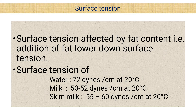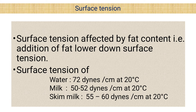Surface tension is affected by fat content — the addition of fat lowers the surface tension. Surface tension of water is 72 dynes per centimeter at 20°C, milk is 50 to 52 dynes per centimeter at 20°C, and skim milk is 55 to 60 dynes per centimeter at 20°C.